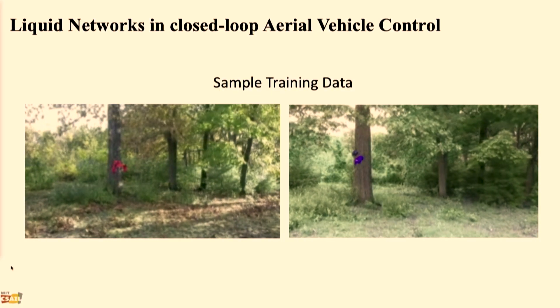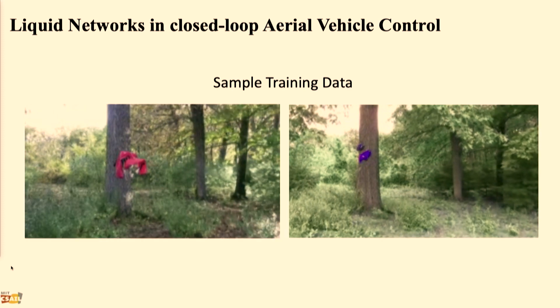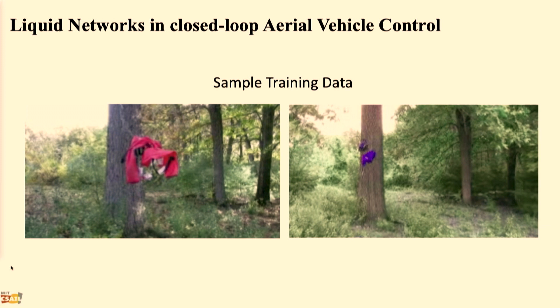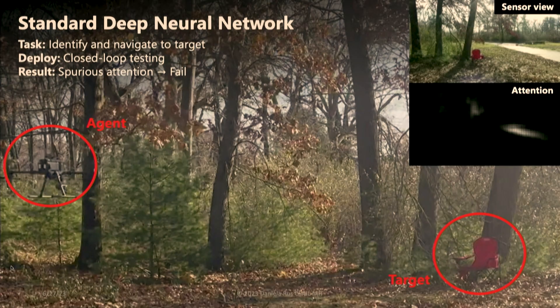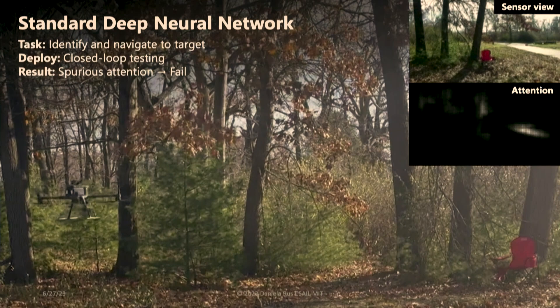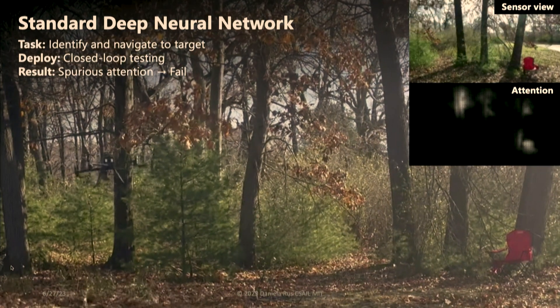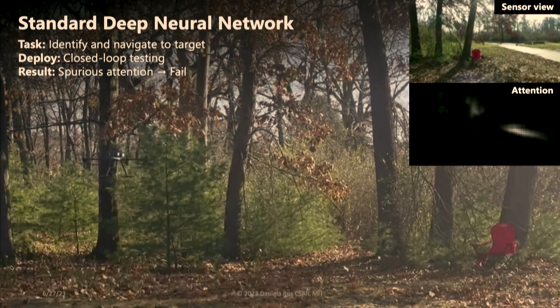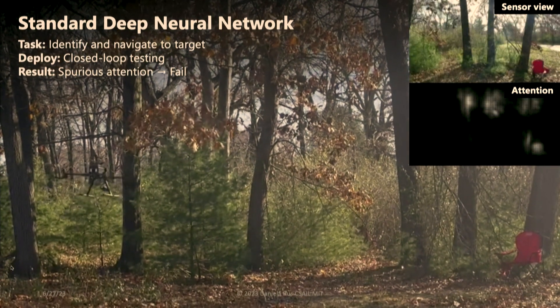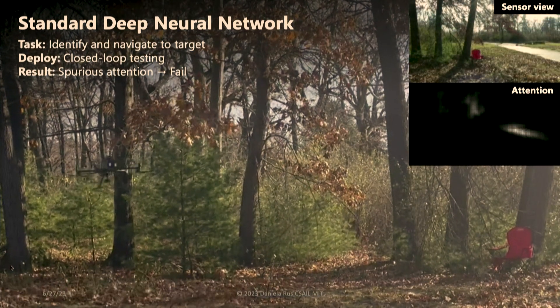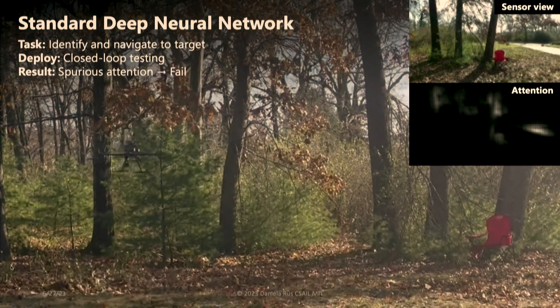Let me give you a final example. We are training a drone how to fly in the woods — notice it's summertime. We give the drone examples of unannotated videos like this, and we train a variety of models, including a standard deep neural network. When we get the standard network trained in that environment to find the object and go to it, the model has a lot of trouble — the attention is very noisy. Notice that the background is different because now it's fall time, so the context has changed. Because deep networks are so dependent on context, they don't do so well.